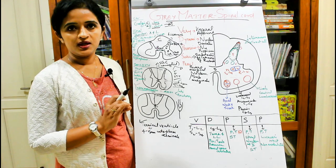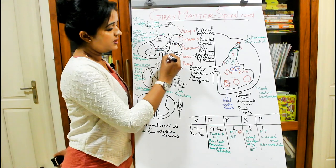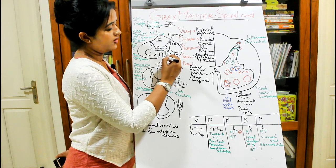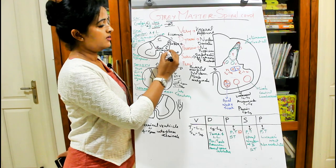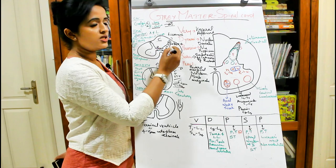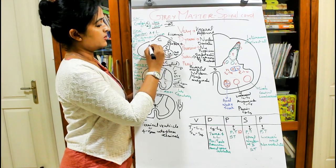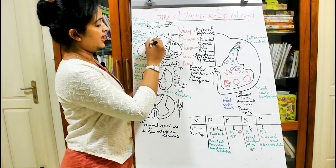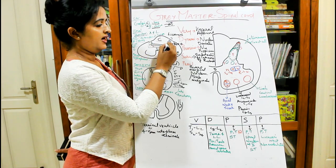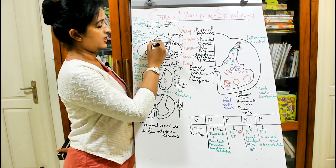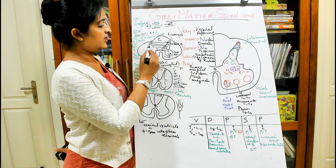For easier description, the anterior horn and posterior horn are divided into parts. The ventral-most aspect of the anterior horn is known as the head of the anterior horn, and the region closer to the center is the base. The posterior horn has different parts: a base, then a neck, on which rests the head, and finally an apex — also remembered as the cap.